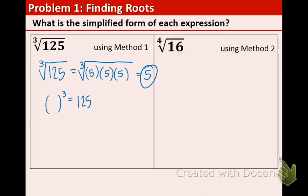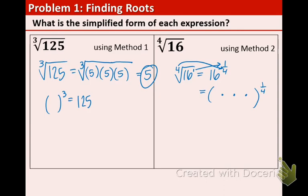Here is the second method using the 4th root of 16. We can rewrite that as 16 to the 1/4, because there is an invisible exponent of 1 on the 16. To remove the radical symbol, you take that 1 and put it on top of the fraction, and you take the 4 in front of the radical and put it on the bottom. So we now have a fractional exponent instead of a radical. We are looking for what multiplied by itself four times gives 16, and the answer is 2. So the 4th root of 16, or 16 to the 1/4, equals 2.